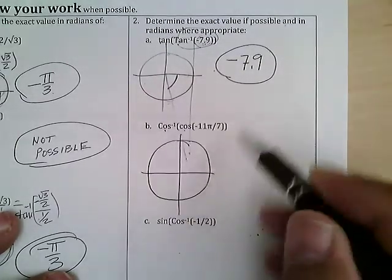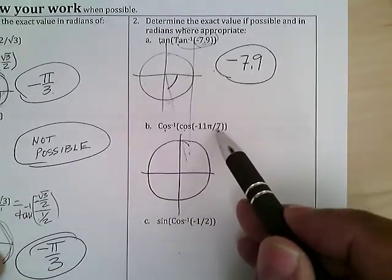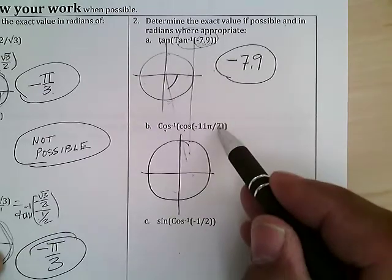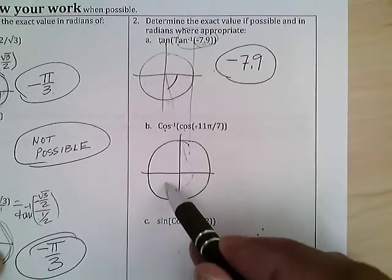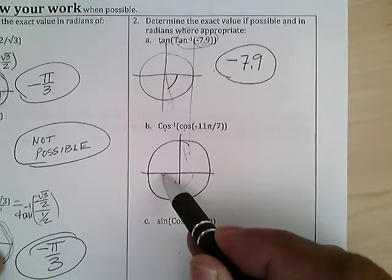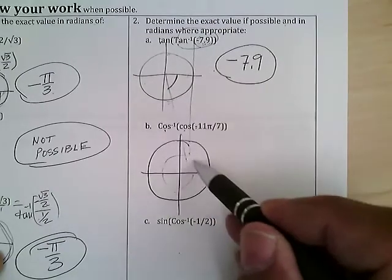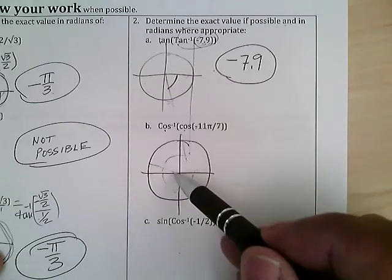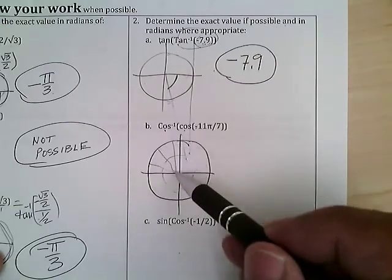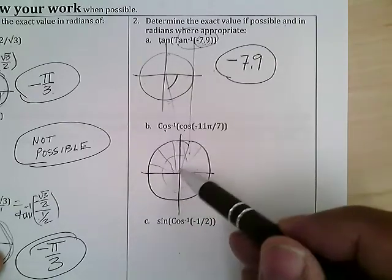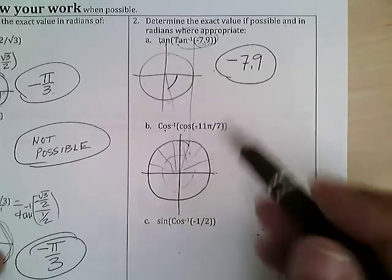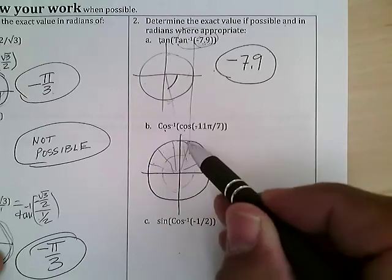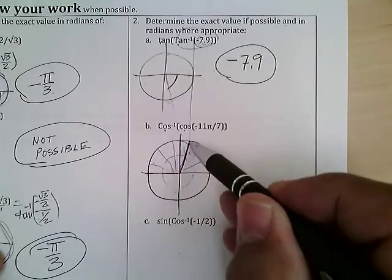The cosine of -11π/7: I've got to go backwards and count 7ths. That's 7/7 to here, then continuing: 1, 2, 3, 4, 5, 6, 7 — so going negative 7, 8, 9, 10, 11. I'm right about here.